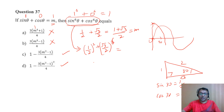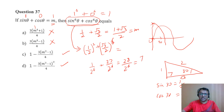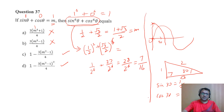This works out to 1/2⁶ + 27/2⁶ = 28/64 = 7/16. So the value of sin⁶θ + cos⁶θ at θ = 30° is 7/16. Now I need to see which option gives me 7/16 when I substitute the value of m = (1 + √3)/2.